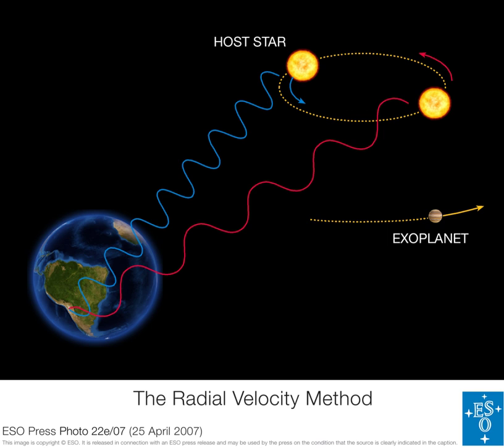In astronomy, the point is usually taken to be the observer on Earth, so the radial velocity then denotes the speed with which the object moves away from or approaches the Earth. In astronomy, radial velocity is often measured to the first order of approximation by Doppler spectroscopy. The quantity obtained by this method may be called the barycentric radial velocity measure or spectroscopic radial velocity.